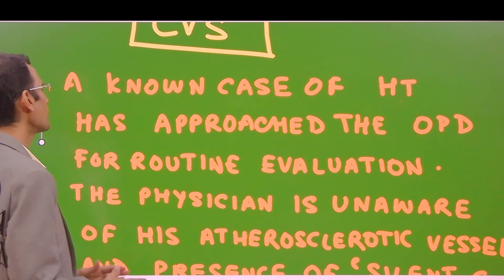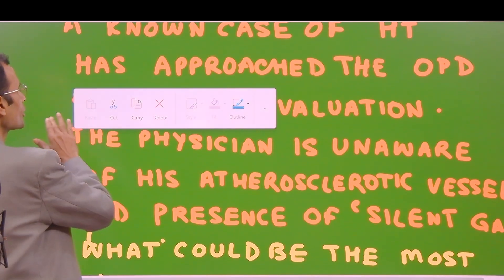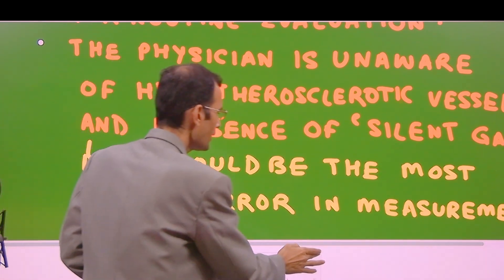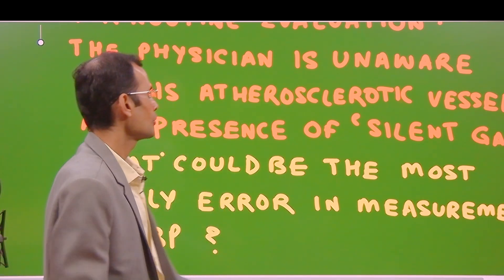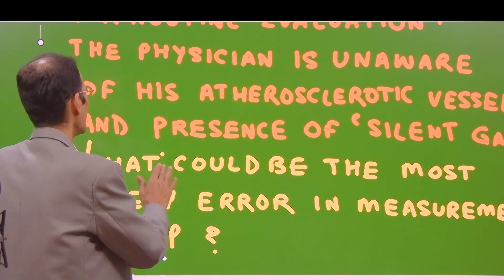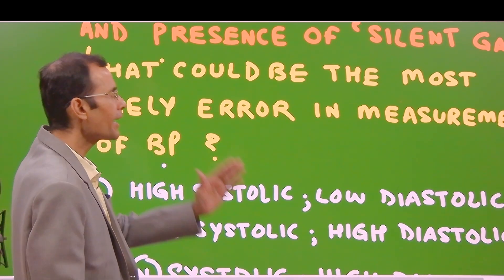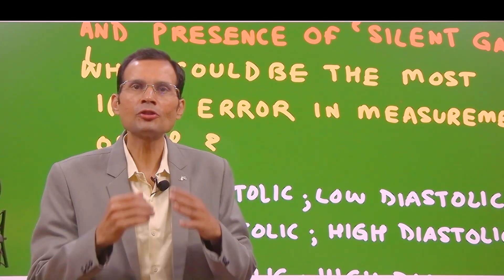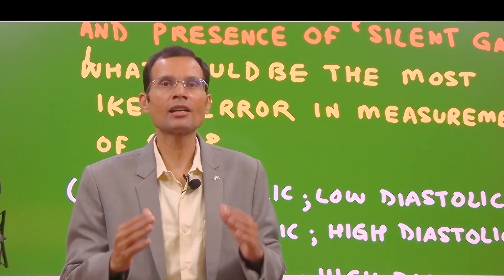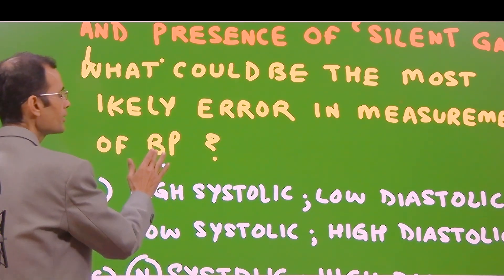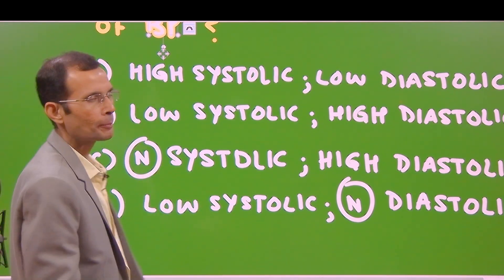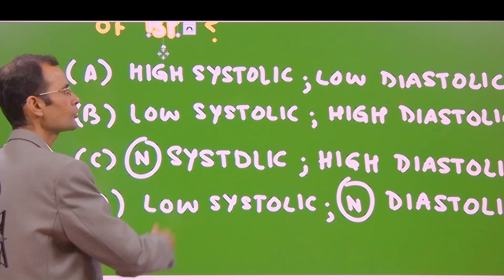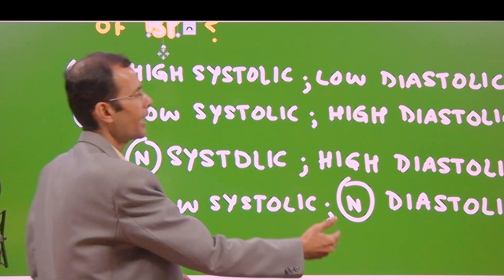A known case of hypertension has approached the OPD for routine evaluation. The physician is unaware of the patient's atherosclerotic vessels and the possible existence of a silent gap, also called as auscultatory gap. The question is: what could be the most likely error in the measurement of blood pressure? The options are: high systolic but low diastolic, erroneously low systolic and high diastolic, normal systolic but high diastolic, or low systolic and normal diastolic.